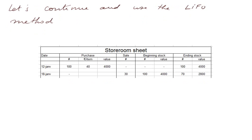We continue using the LIFO method. On the 18th of January, we sell 30 items. Here LIFO makes no difference yet. The beginning stock is 100 items at 4,000 euros. At the end of the sale, the ending stock — the ongoing ending stock — is 70 items, and the ongoing value of the ending stock is 2,800 euros, that is 70 multiplied by 40.